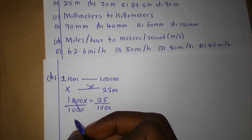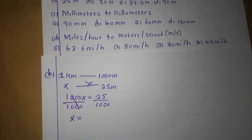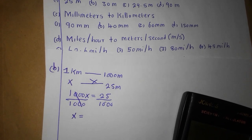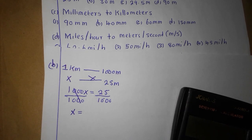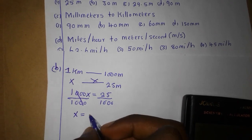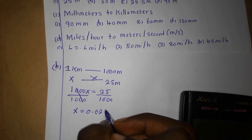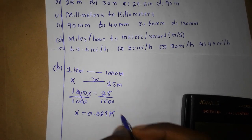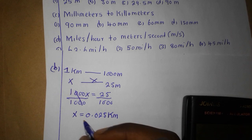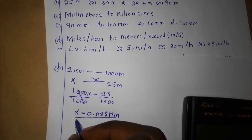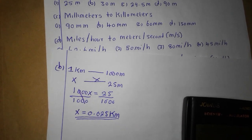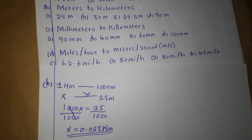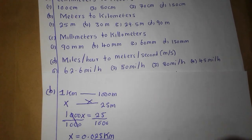So 1000x = 25. Dividing by 1000 on both sides: x = 25 divided by 1000. Therefore our answer is 0.025 kilometers. We have converted from meters to kilometers.